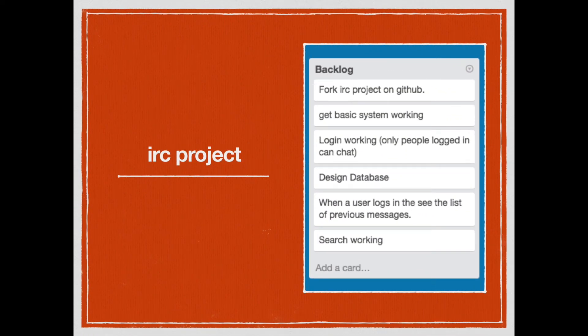For example, if we were doing an IRC project, we'd have a backlog like: fork the IRC project, get the basic system working, work on the login, set up a database, display previous messages when the user logs in, and add search. You can see what it'd be like — a list of features and things we need to do.